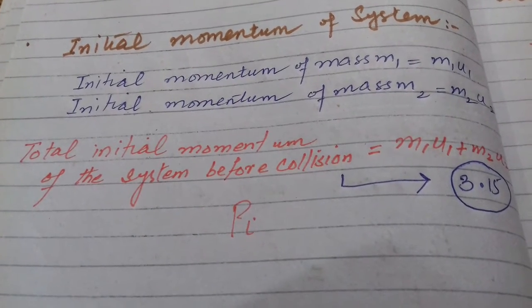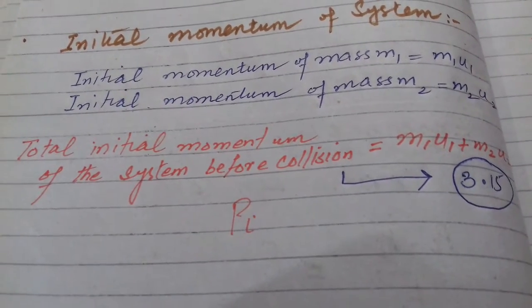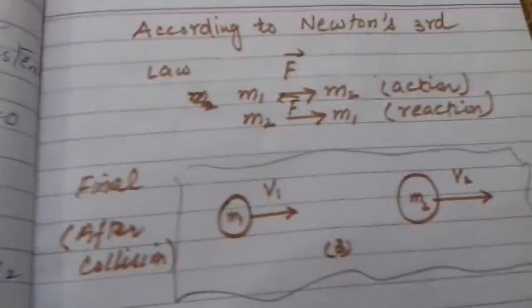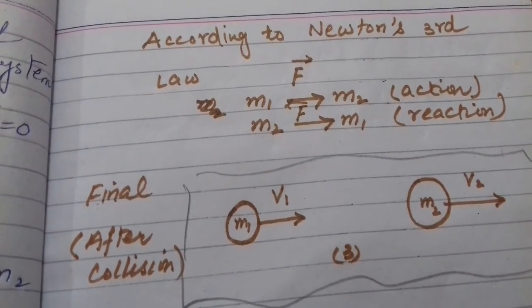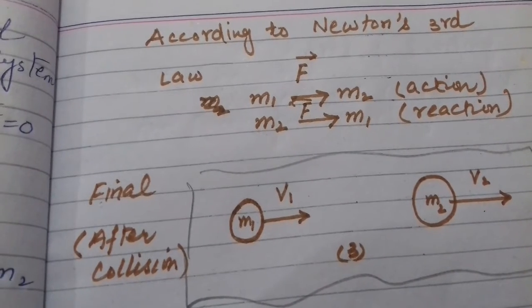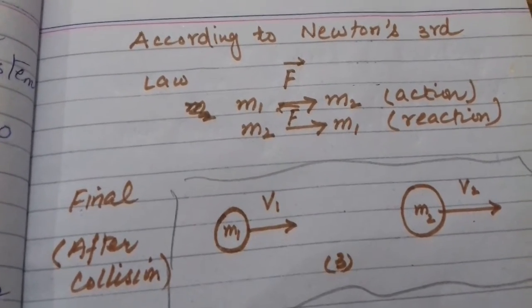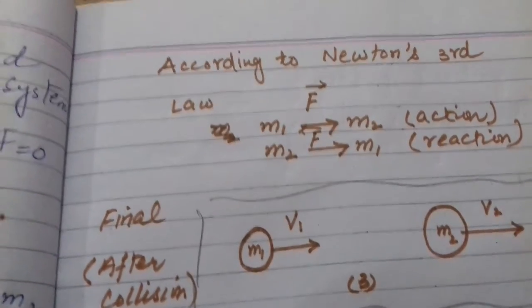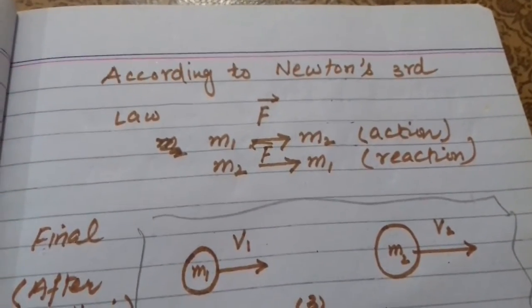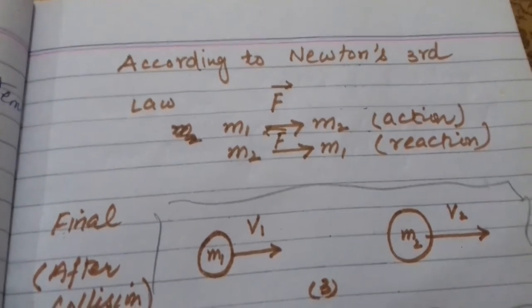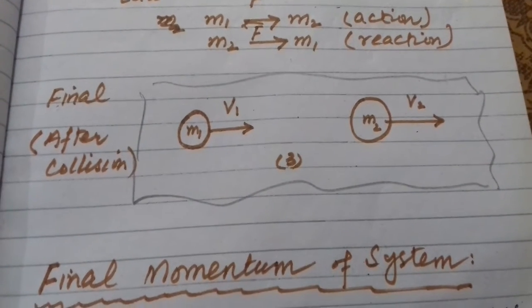This is the total initial momentum of the system before any collision, any interaction. Now, according to Newton's third law of motion, when M1 and M2 collide, this is the action force. And M2 also has a force exerted on M1 which is the reaction force. Both forces are equal in magnitude but opposite in direction. The particles will not remain in contact with each other.